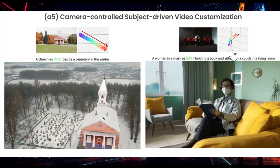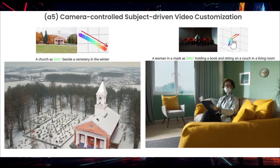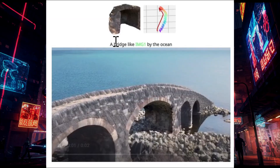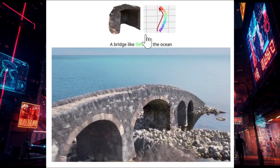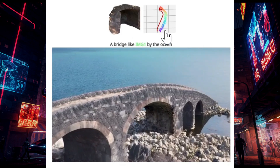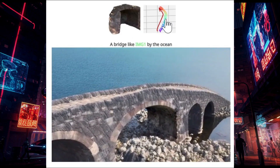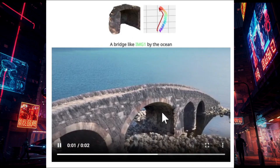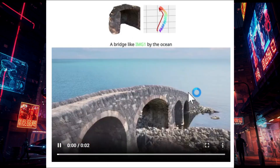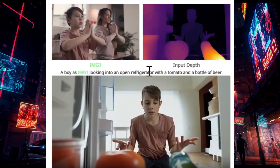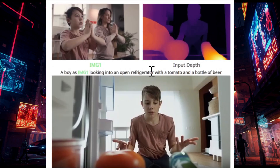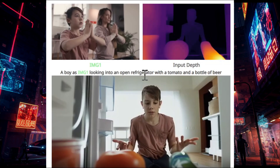You can see the direction of the video shown, with an image of a woman in a mask in a living room and the camera direction indicated. Here's another example: a beauty scene by the ocean with camera motion applied, and it really creates the video with the corresponding camera movement.